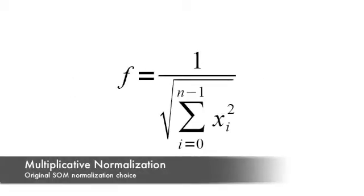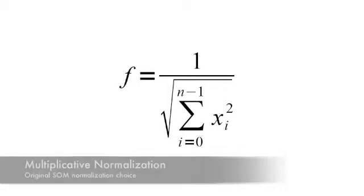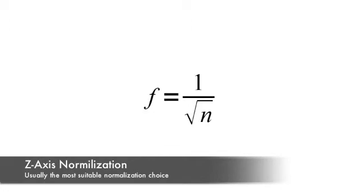Multiplicative normalization is the original normalization type that was introduced with the self-organizing map. To use multiplicative normalization, you must calculate the vector length, which will give you a normalization factor that will be multiplied against all of the input neurons. Here you see the vector length being calculated, resulting in f being the normalization factor. This value will be multiplied by all of the inputs. The z-axis normalization has generally shown itself to be superior to the multiplicative normalization process.